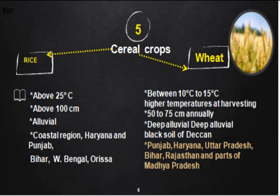Alluvial soil is good for wheat, as found in the northern plains; black soil regions of the Deccan are also good for wheat. Punjab, Haryana, Uttar Pradesh, Bihar, Rajasthan, and Madhya Pradesh are the major wheat-growing states. Like rice, China is the leading producer of wheat, and India ranks second with 98 million tons of wheat production. Uttar Pradesh is the largest producing state in the country.